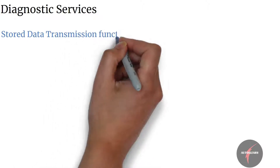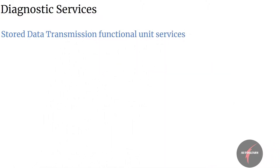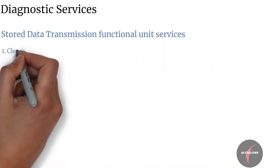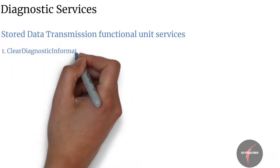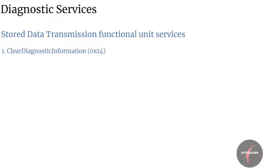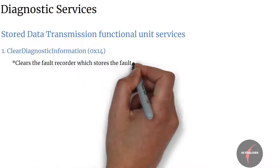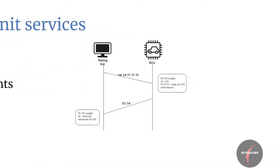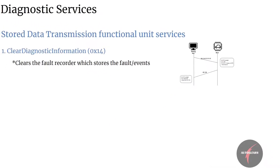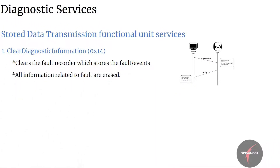Let's now look into the stored data transmission functional unit services. Firstly, we have clear diagnostic information. This service shall clear the fault recorder, which stores the faults or events of the ECU. All the information related to faults shall be erased when clear diagnostic information is requested.